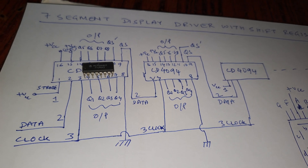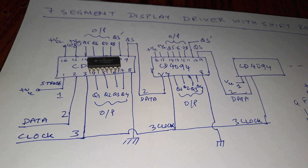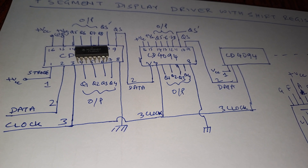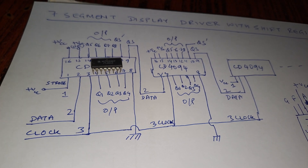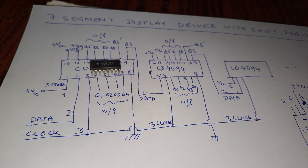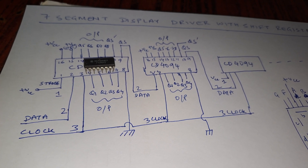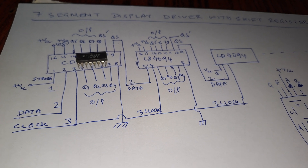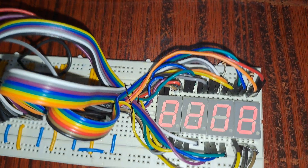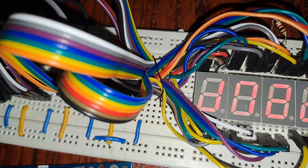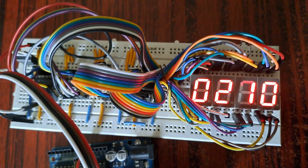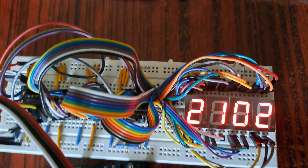So this is how we can make a 7-segment display driver with shift registers. This is the first part of the video. In the second part I am going to show you a counter using Arduino UNO — using only two pins for the display and one pin for the counting pulse. This is an application of how to extend the output pins of an Arduino. Thanks for watching, please watch the second part.